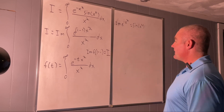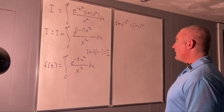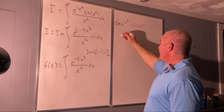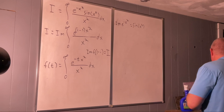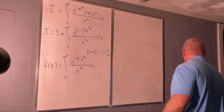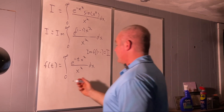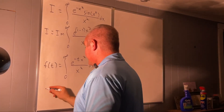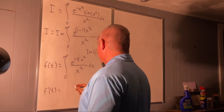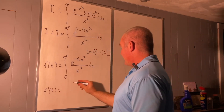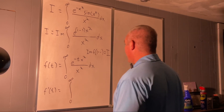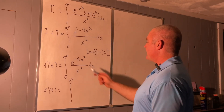Now let's take a derivative with respect to t. F prime of t — we'll still have the integral from zero to infinity. If we take the derivative with respect to t of this, we still get back the e to the negative tx squared.